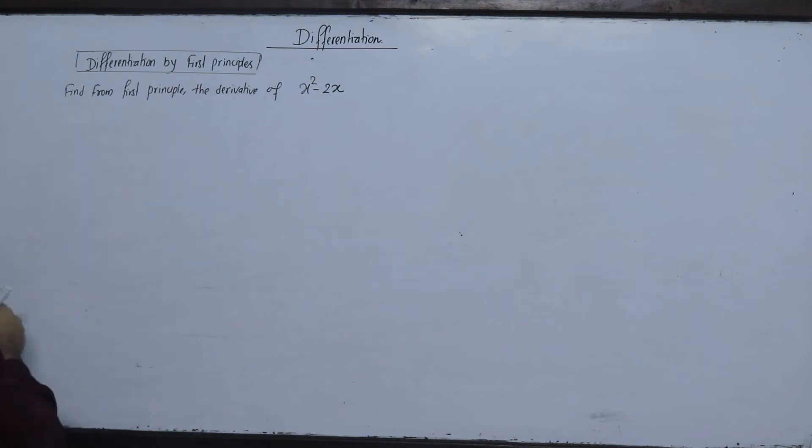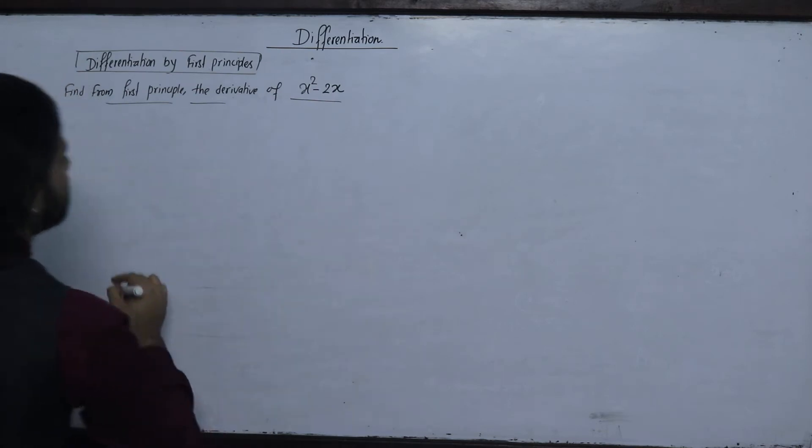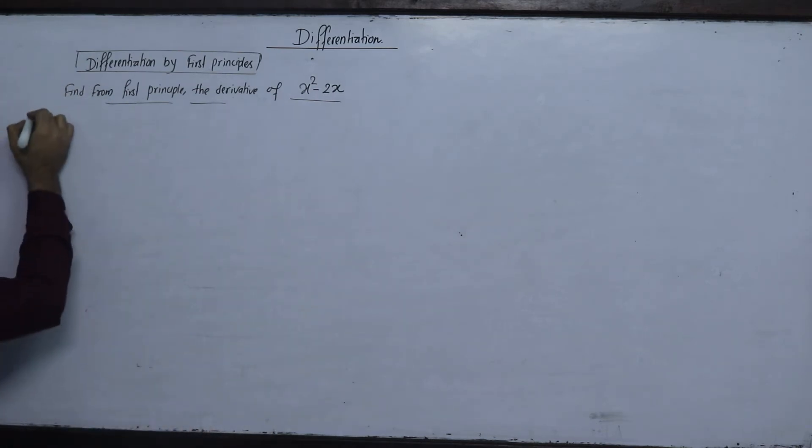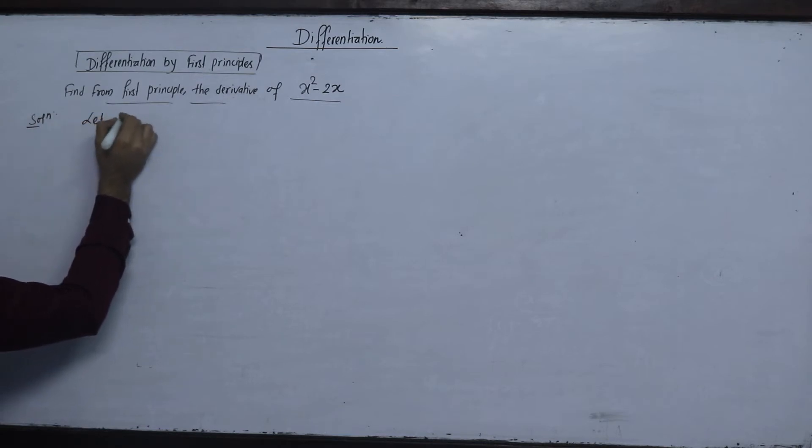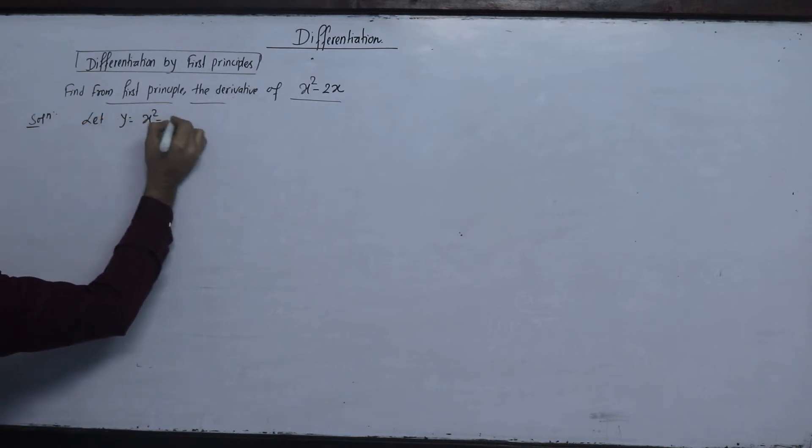Find from the first principle the derivative of x square minus 2x. In the previous class, the derivative of y is equal to x square minus 2x.